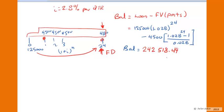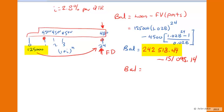From that number we subtract the final value of the annuity: $4,500 multiplied by the annuity factor. That final value of the annuity ends up being $150,819.14 — store that in memory 2. We end up with the difference being the balance outstanding. Let's interpret these two numbers: this $242,000 represents the final value of the $125,000 loan if we had not made any payments whatsoever over the first six years.